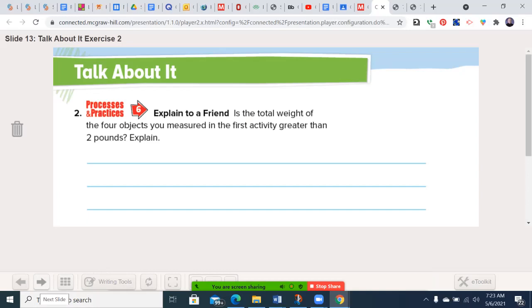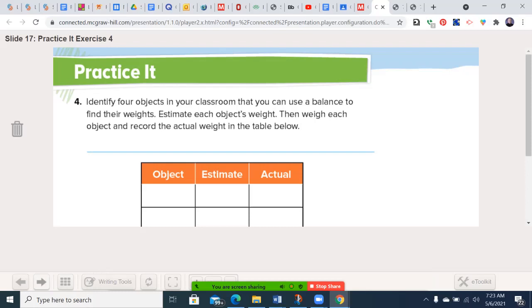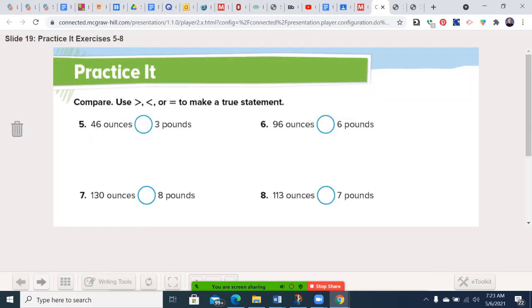Let's go to the Practice It section. This is where you're going to use your math. If you have ounces and need to go to pounds, divide by 16. If you have pounds and need to go to ounces, multiply by 16. Go ahead and pause the video, do these four problems, and then we'll move forward.